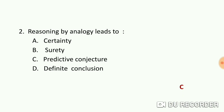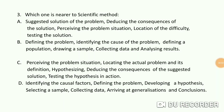We have two main methods: deductive reasoning and inductive reasoning. One method of deductive reasoning is syllogism. In deduction, if we have a logical relation we can reach a definite conclusion. The term 'predictive conjecture' relates to probability and is connected to the method of analogy, which is the inductive method.